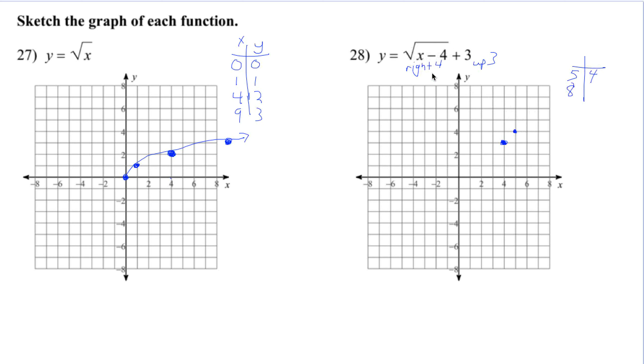Well, 8. 8 minus 4 is 4. The square root of 4 is 2. 2 plus 3 is 5. So we have the point 8, 5 really on our graph here. And so we have our starting point and we go up and through these other two points. And there's that graph.